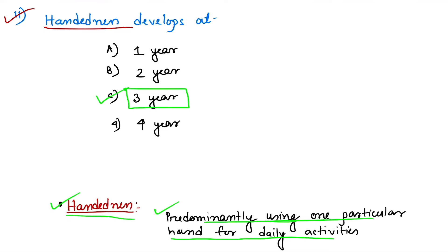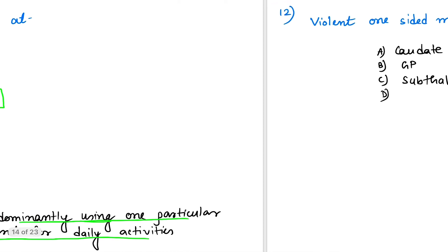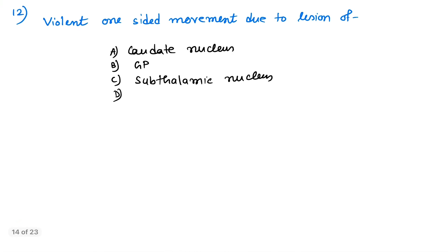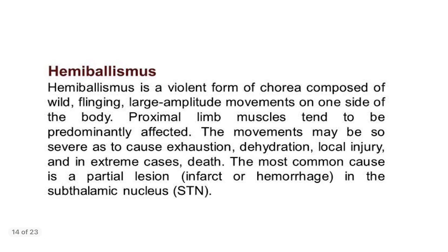Question number 12: violent one-sided movement occurs due to lesion of which structure. As all of you know, violent one-sided movement is hemiballismus.